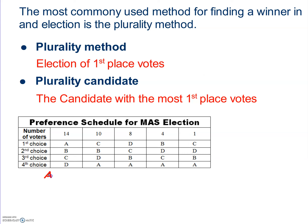We have candidate A, candidate B, candidate C, and candidate D, and we want to figure out how many first place votes each of these candidates had. I'm just focusing on the very top row of first place votes. Candidate A is in first place in one column with 14 votes and is not in first place anywhere else, so candidate A has 14 first place votes.